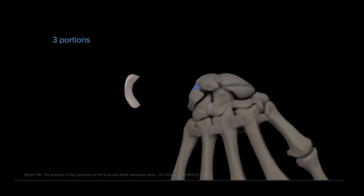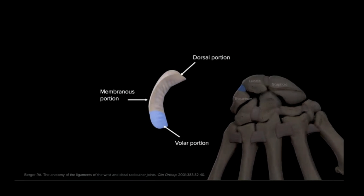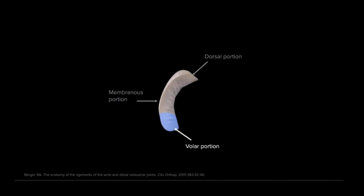The lunotriquetral ligament is composed of three portions: the dorsal, membranous, and volar portions. The volar aspect is the strongest portion of the ligament. The dorsal portion also plays a role in stability. The membranous portion is not responsible for significant stability itself, but rather serves as the link between the volar and dorsal portions.